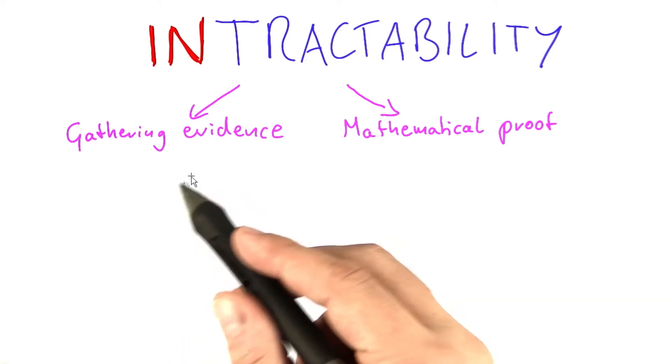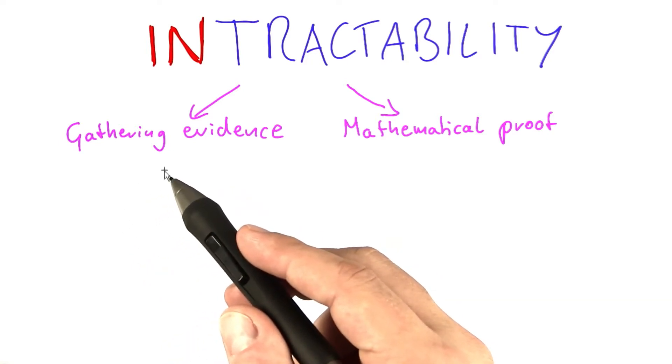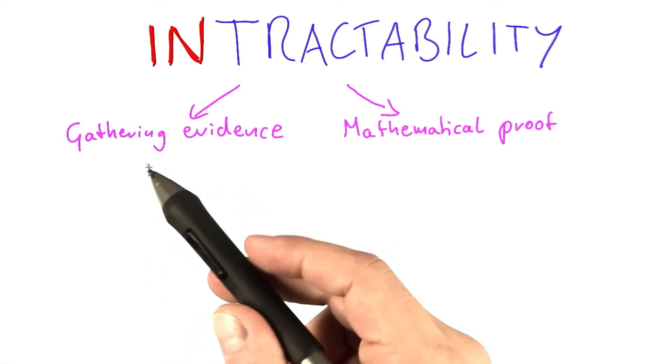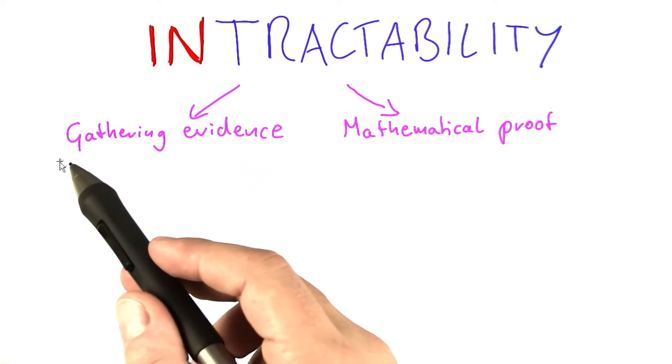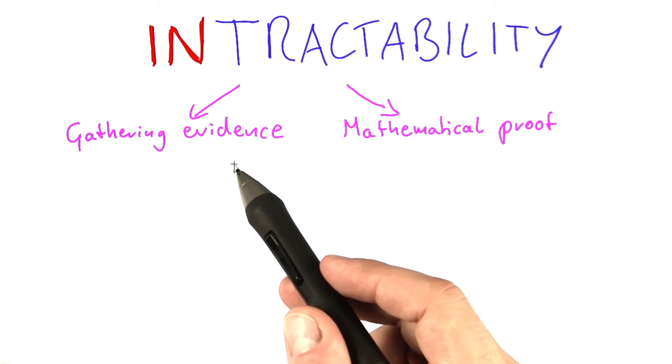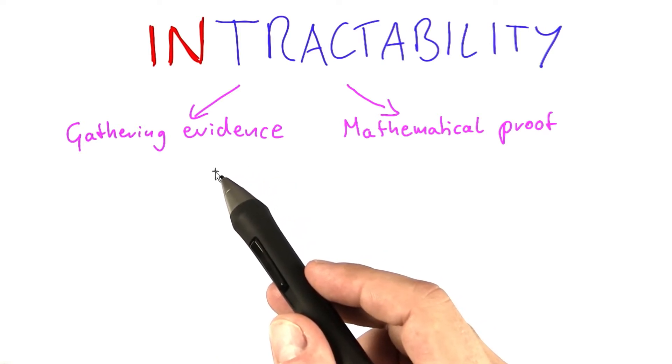Of course, we don't yet really know if their problems really are intractable, because as we have just seen, there are also arguments why their problems could actually be tractable. Just having an exponential number of solutions does not necessarily mean that their problems are difficult. But we're going to see how it turns out.